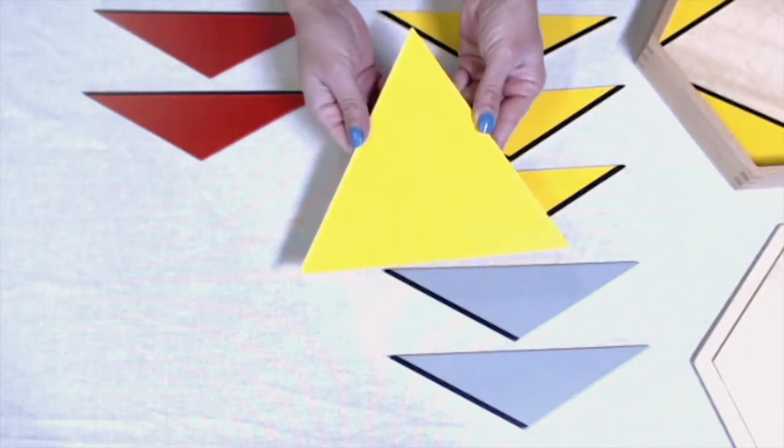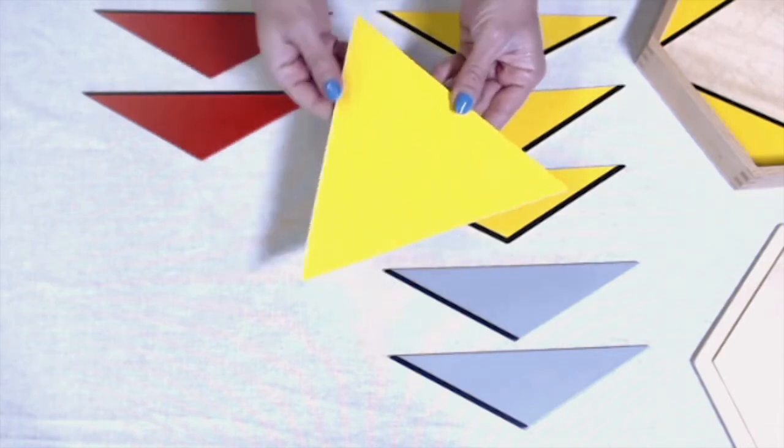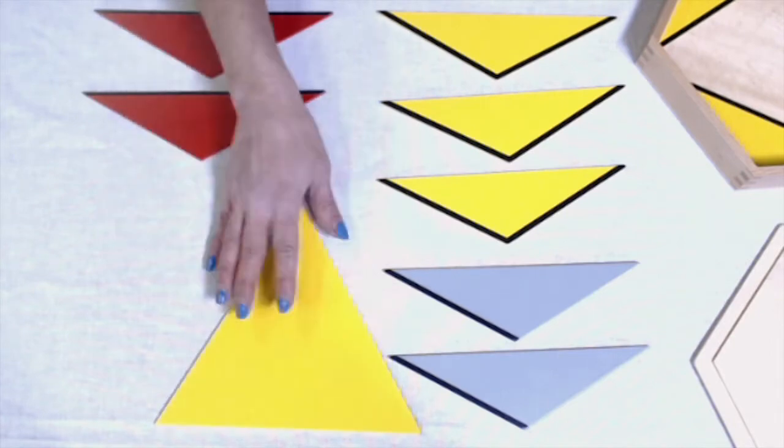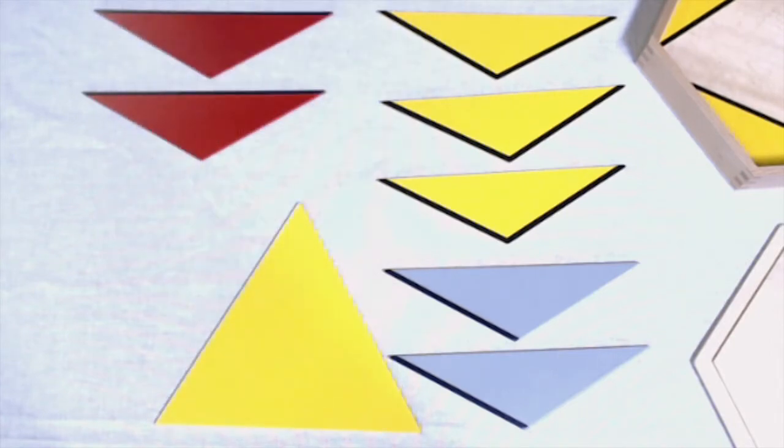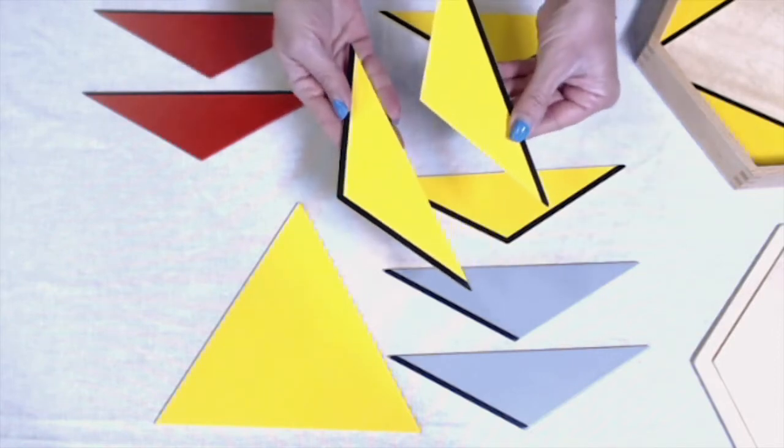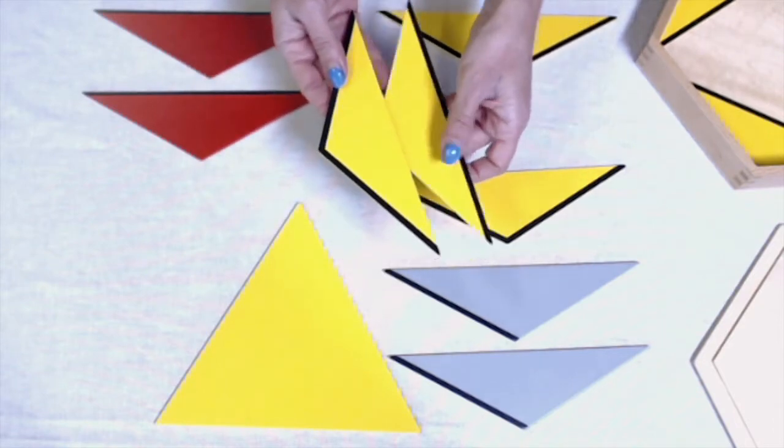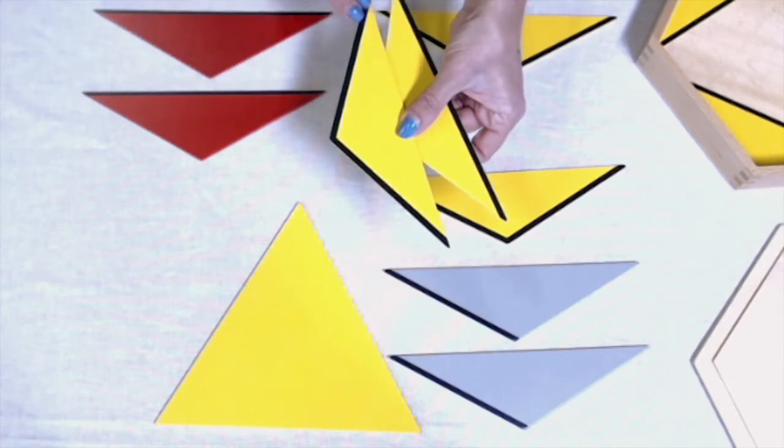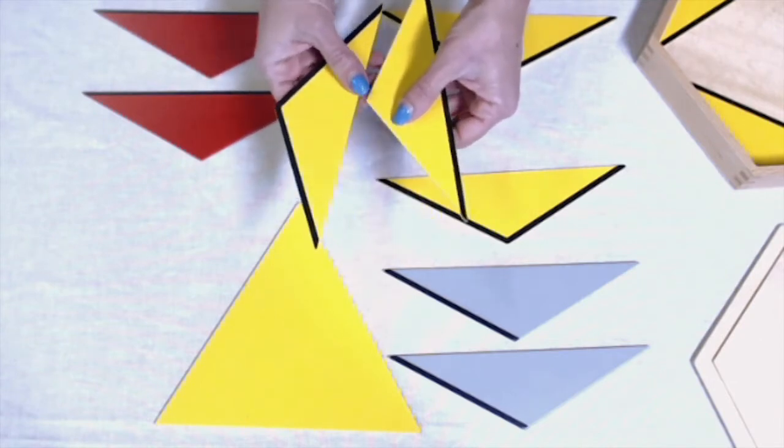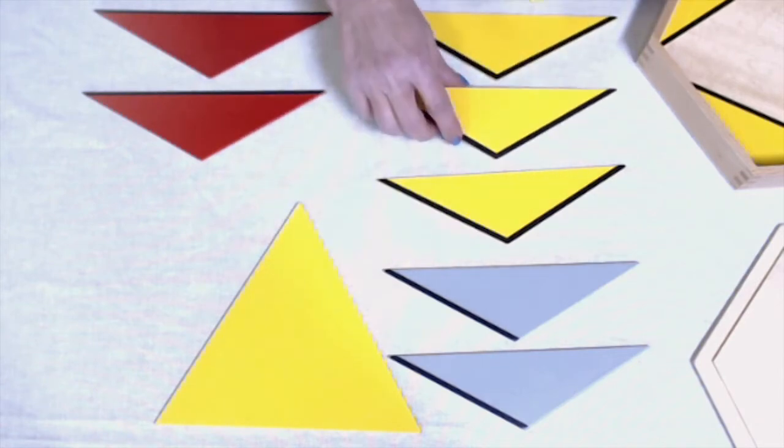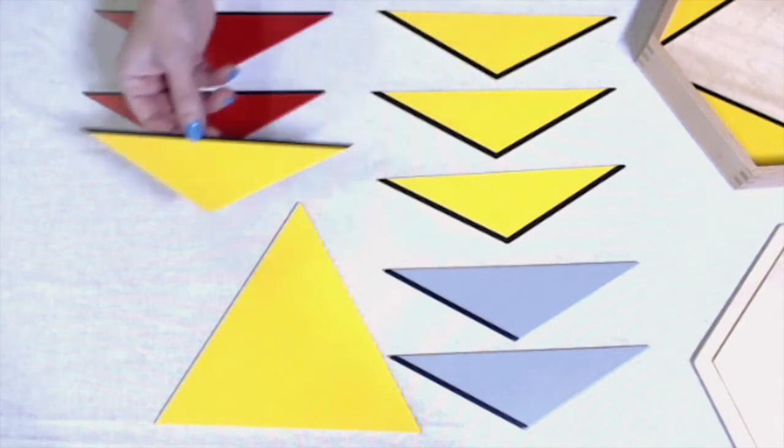This triangle's shape is different. This is an equilateral triangle. It's very large. A yellow isosceles triangle, but this is different than these ones. Do you see what makes it different? This one has black lines on the two short sides, and this one only has one black line on the very long side. So they're both yellow, but they're different. So I'm going to put it separate.